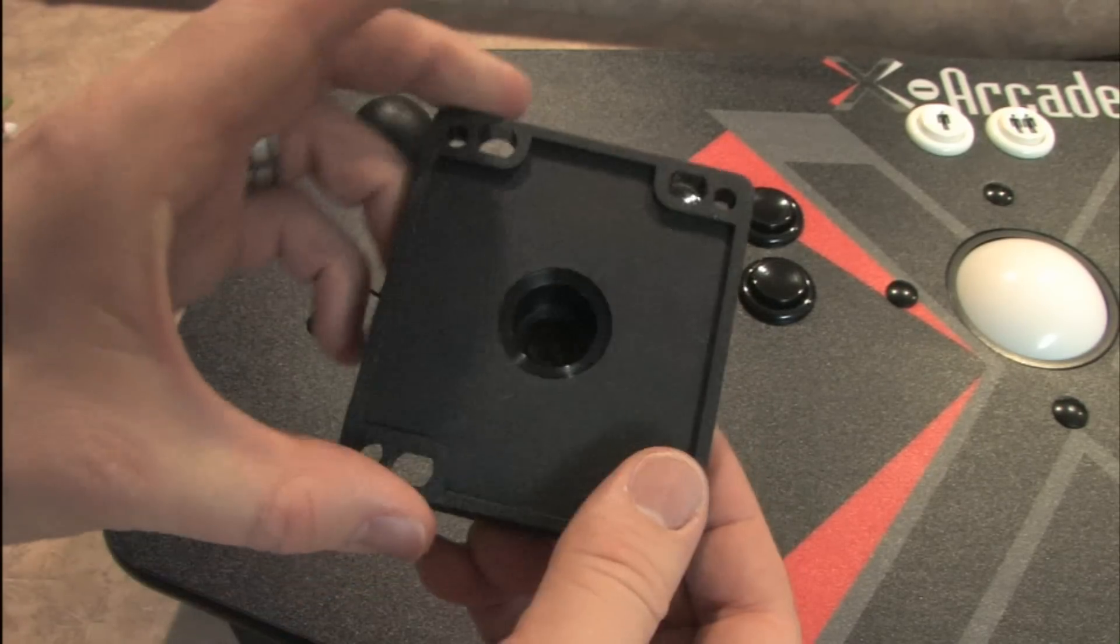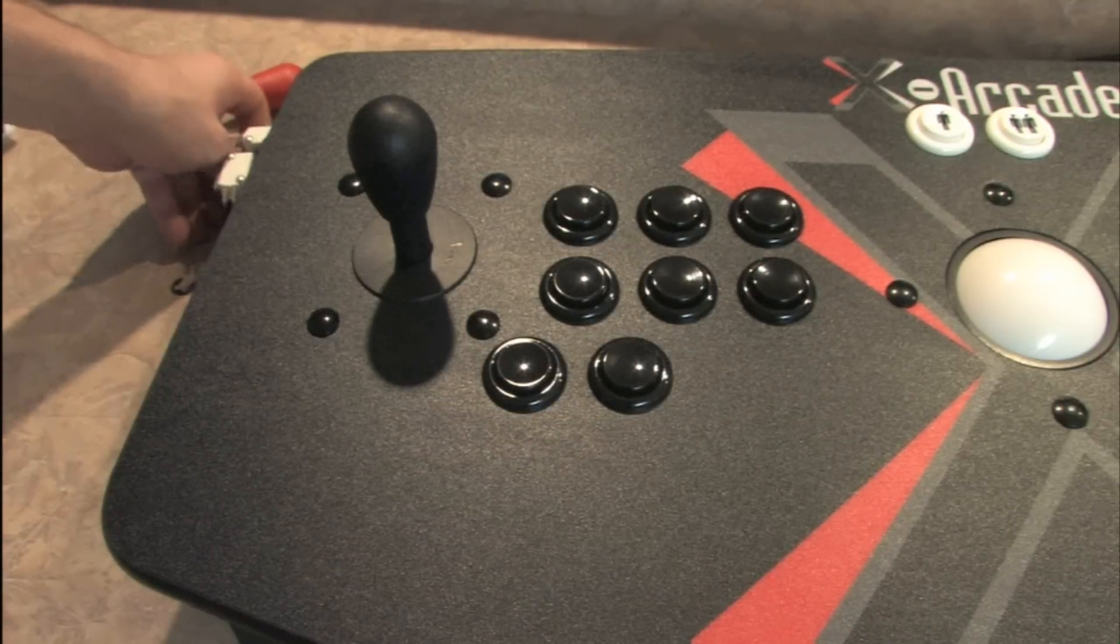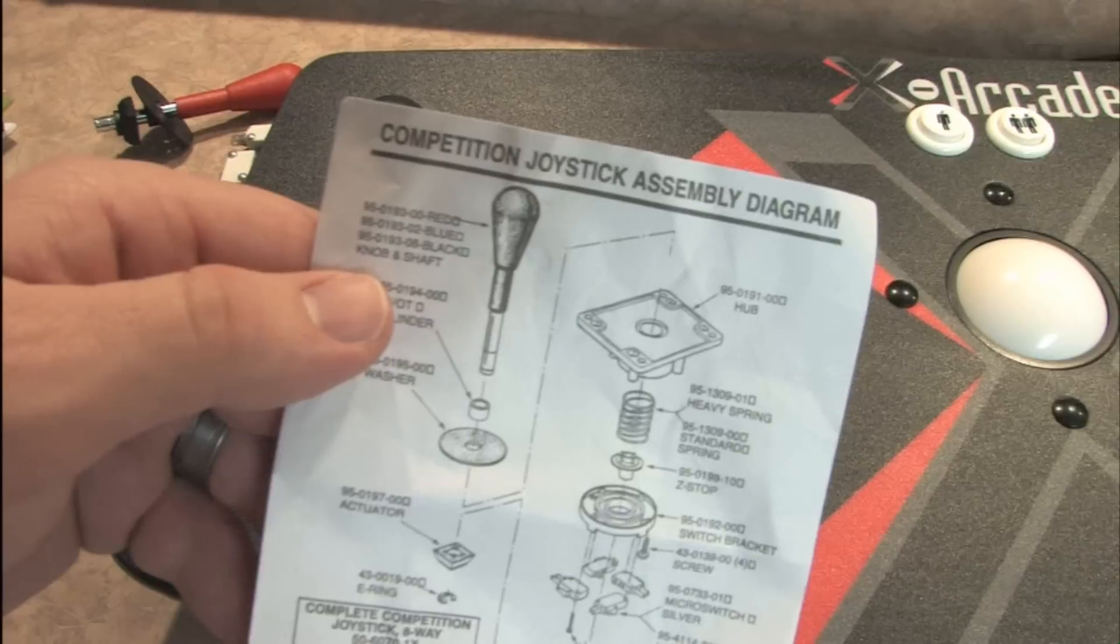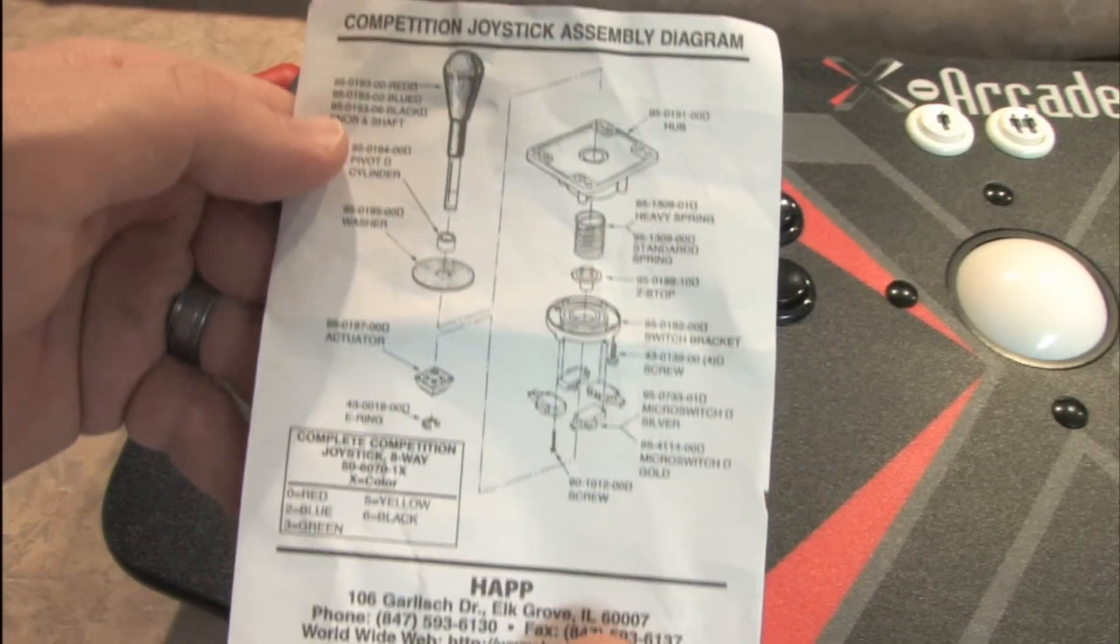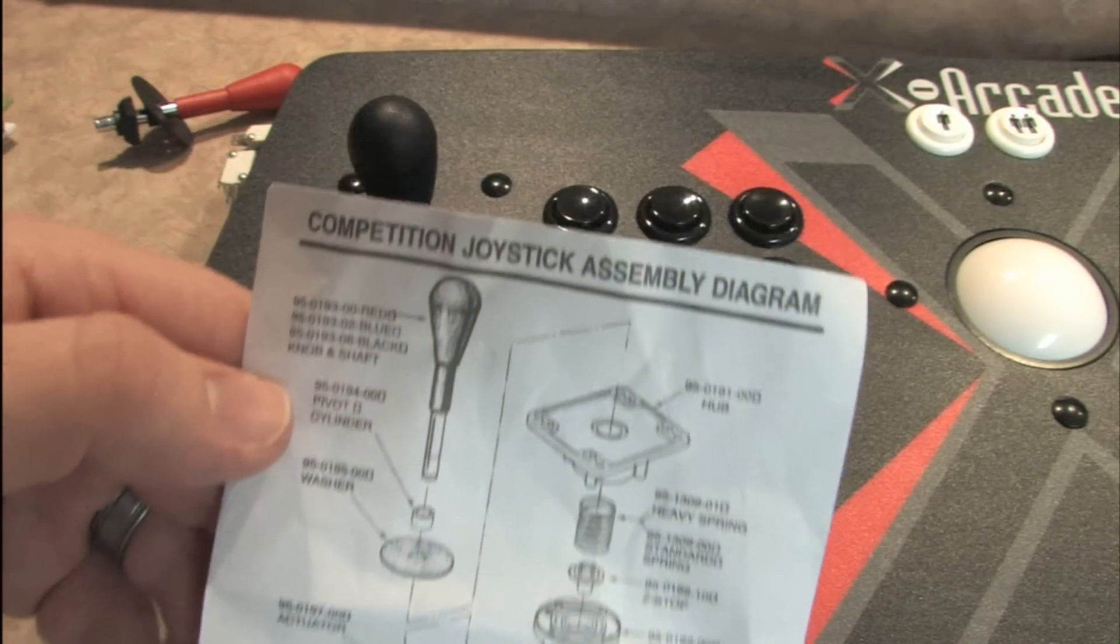It's time for some surgery. Everyone put on your lab coat and pretend like you're a doctor. It's time to cut this thing open and install a real HAP competition joystick. I bought a red one from lizardlick.com. With shipping the total came to $15.